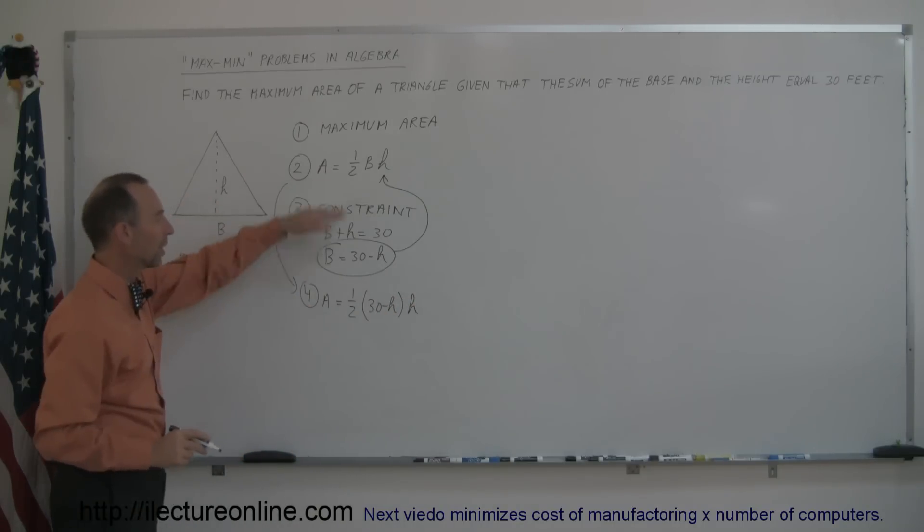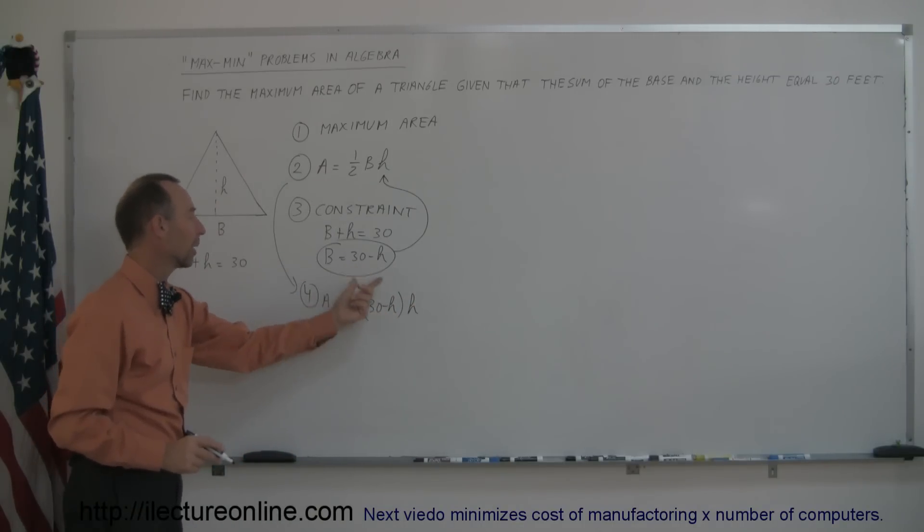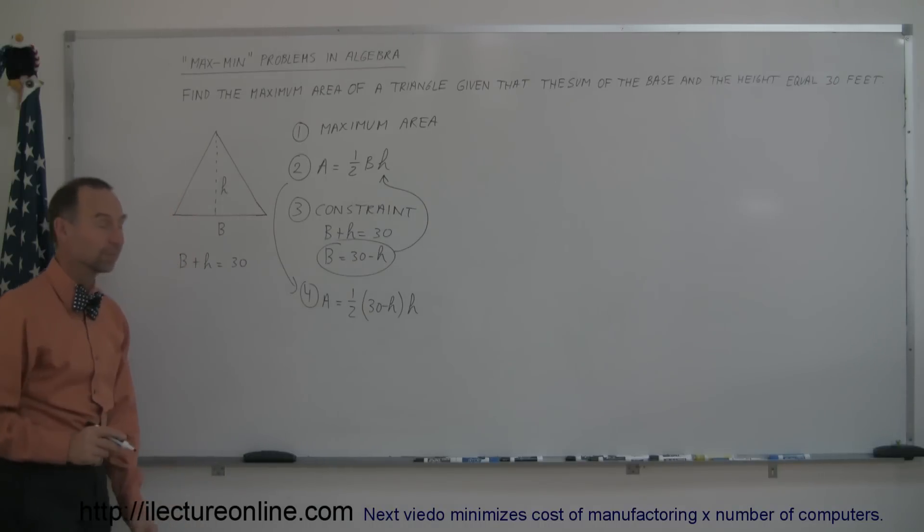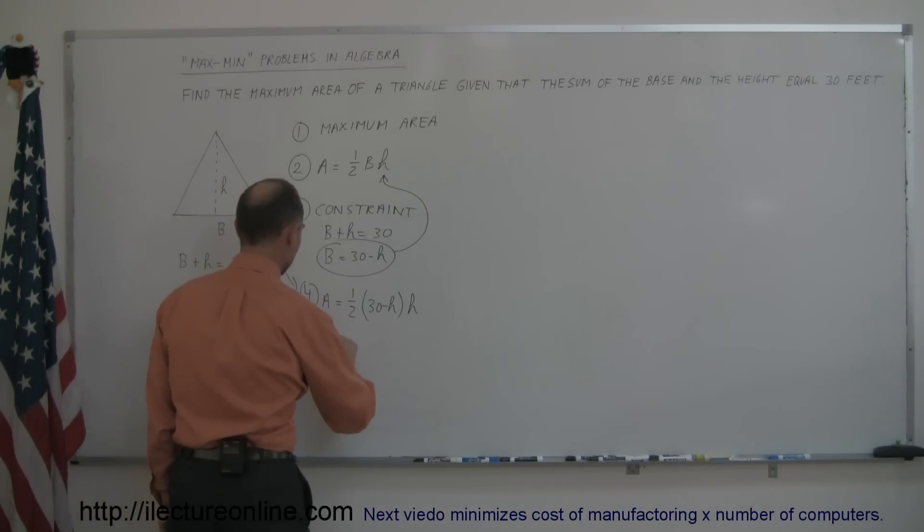So there's the same equation, but b replaced by what b is equal to in terms of h. Now when we multiply that out, we get the area is equal to one-half times 30 times h, which is 15h, minus one-half times h squared.